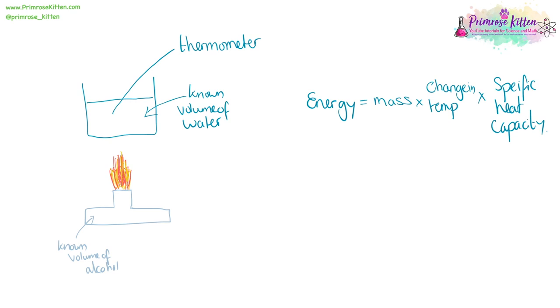If you want to measure the energy released by burning alcohols, and you can always compare different types of alcohol with this, you need a known volume of alcohol. You can weigh this on the scales. Burn it, use it to heat a known volume of water and measure the temperature change. We can then work out that energy by using the mass times temperature change times the specific heat capacity of water.